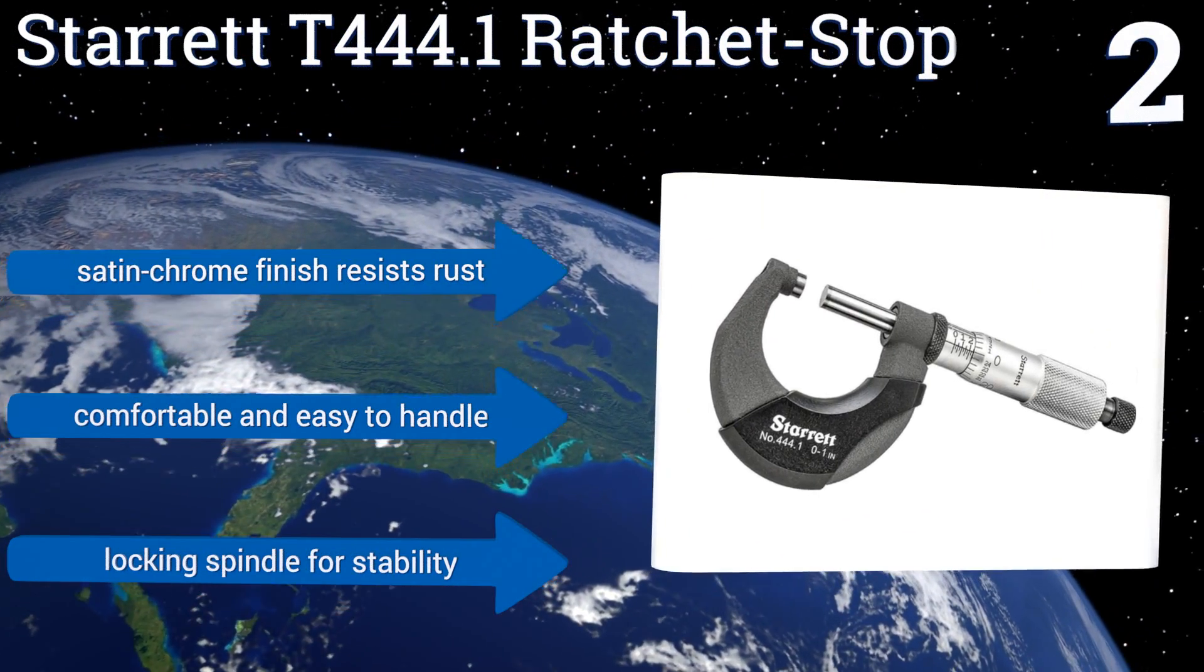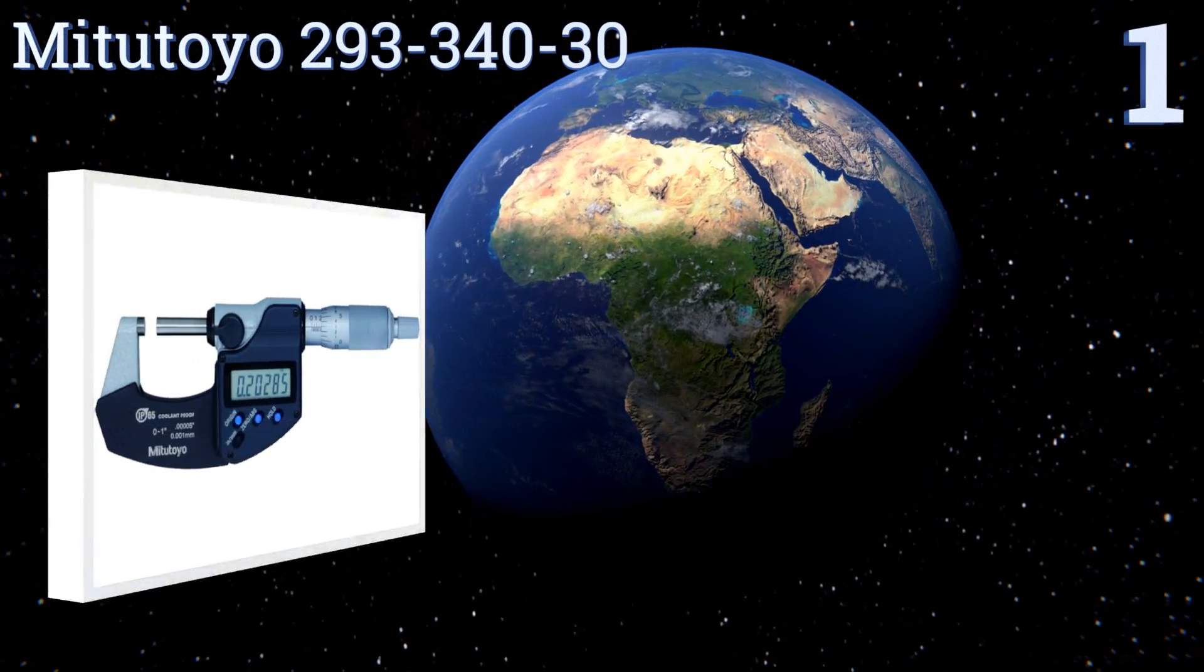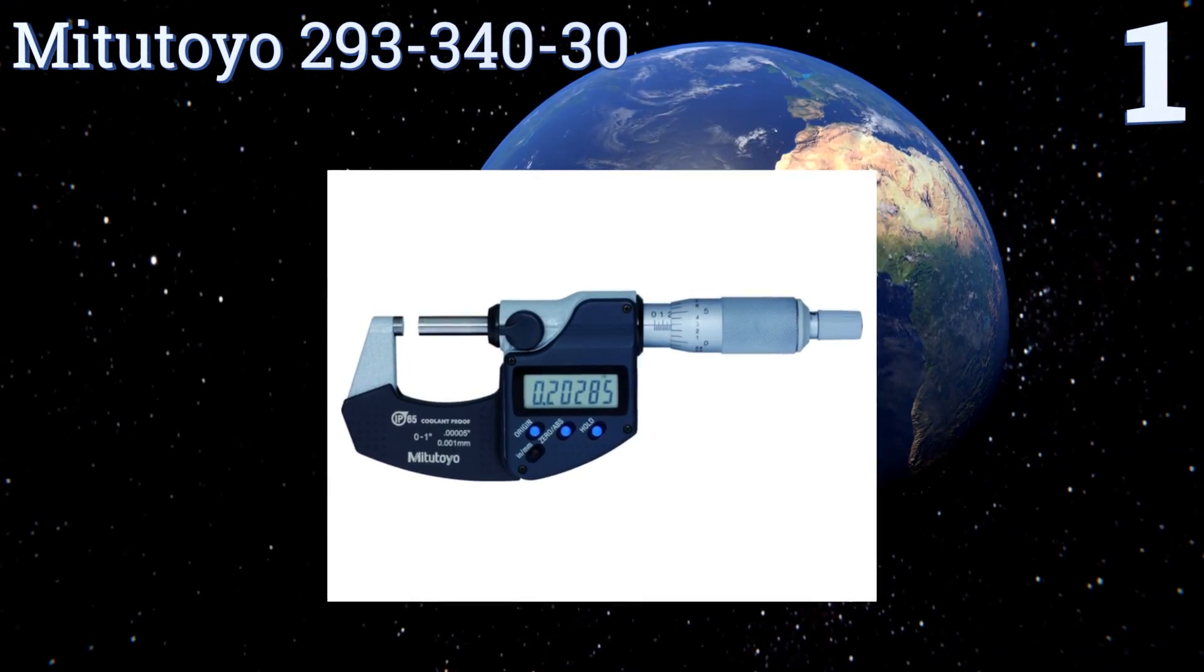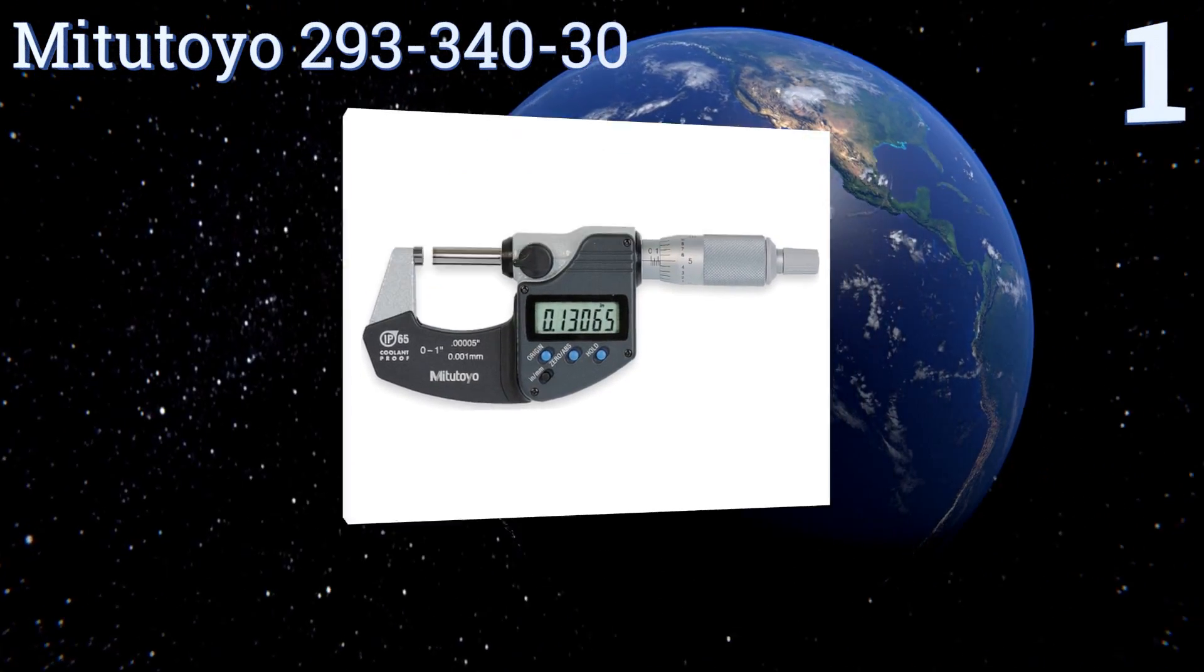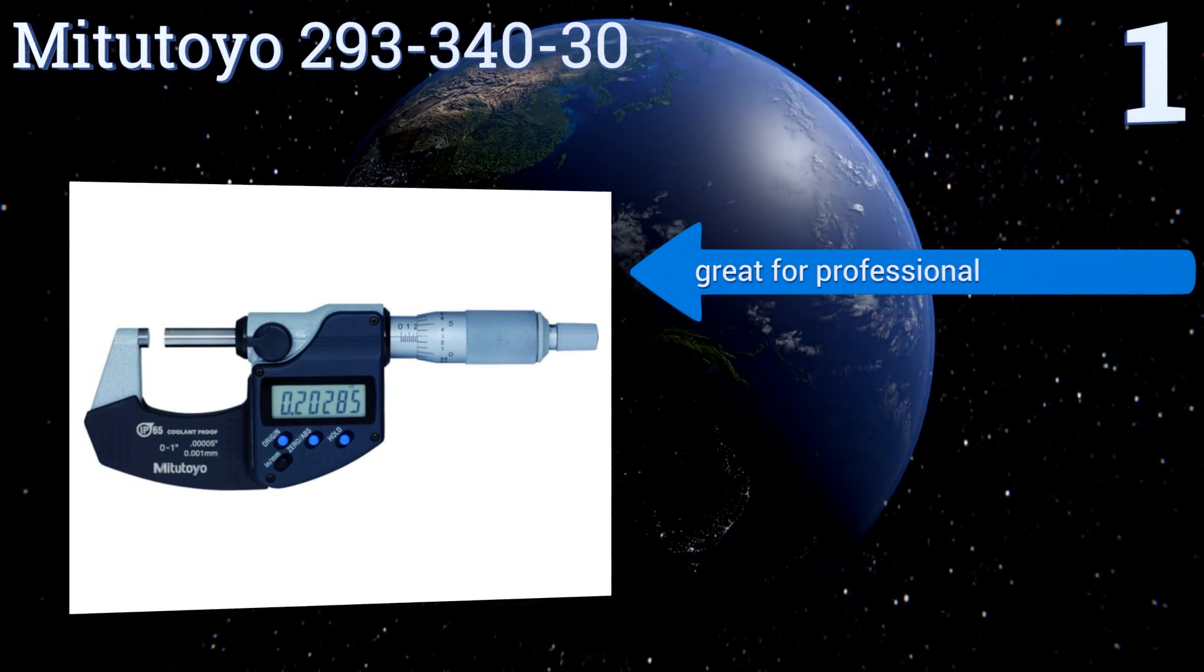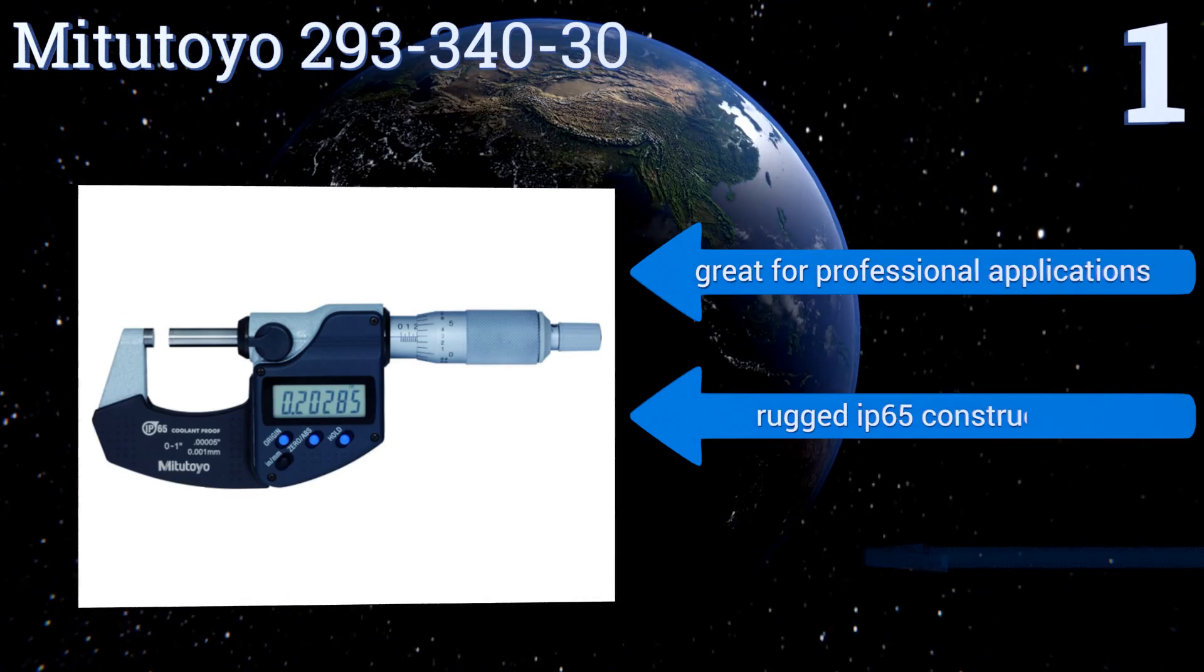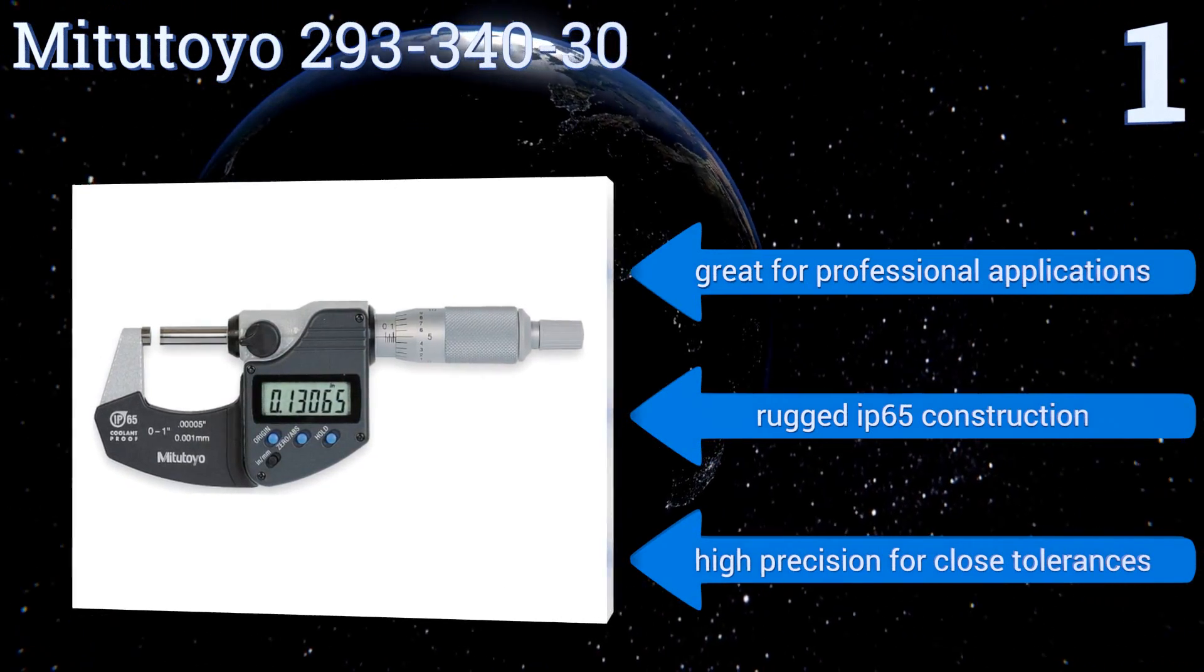Taking the top spot on our list, made by one of the top names in digital calipers, the Mitutoyo 293-340-30 features carbide tipped measuring faces suitable for use in harsh working conditions. Take accurate reliable readings with its consistent pressure and long-term durability. This one's great for professional applications and features a rugged IP65 construction and high precision for close tolerances.